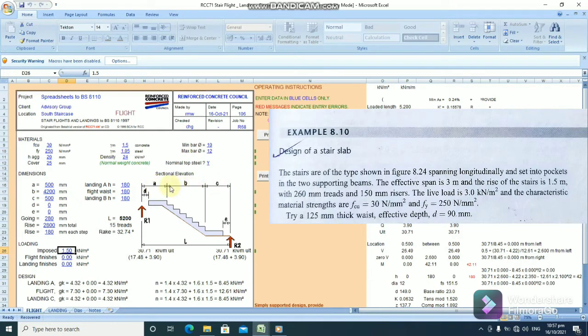B refers to the flight of the stairs, while A and C refers to the landing. And the L here refers to the span of the staircase. And, in this question, we have a span of 3 meters.